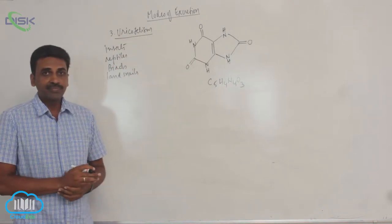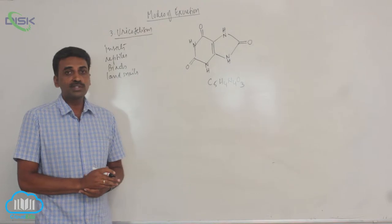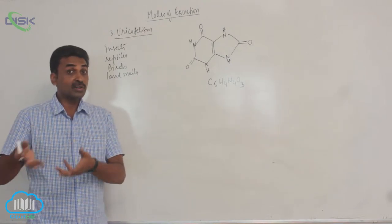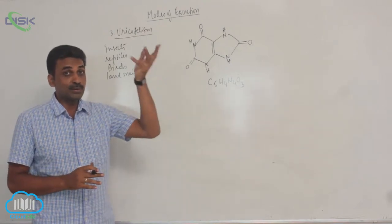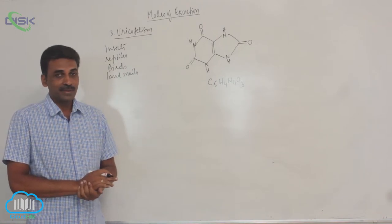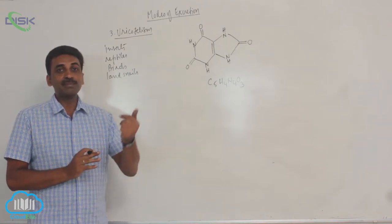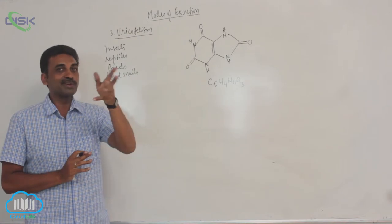Uric acid is also produced by all tracheal arthropods. It also includes centipedes, millipedes. For example centipedes, millipedes along with ammonia it is producing uric acid.